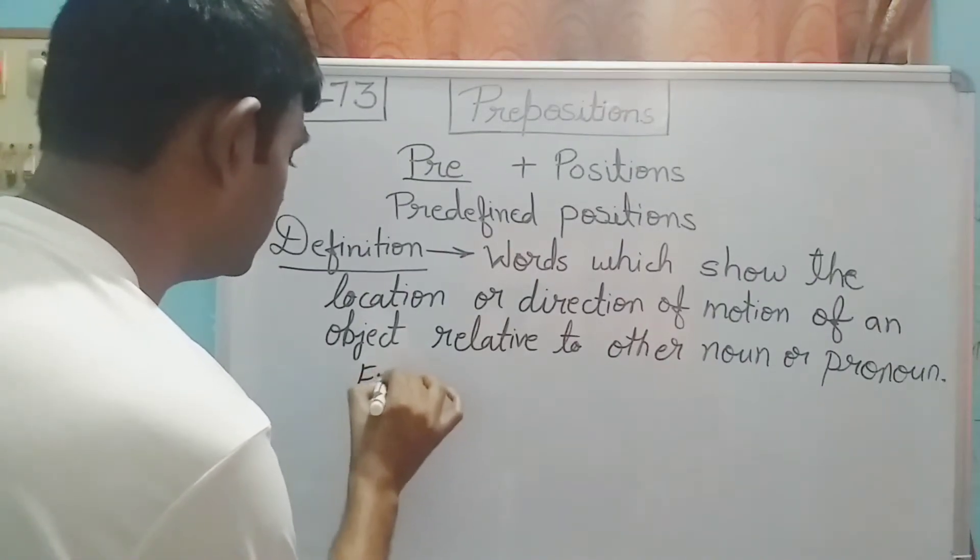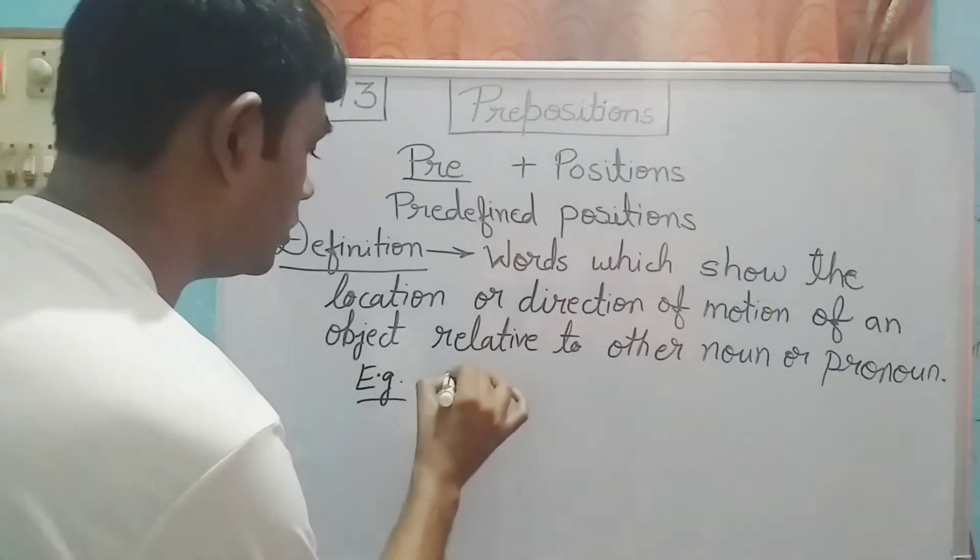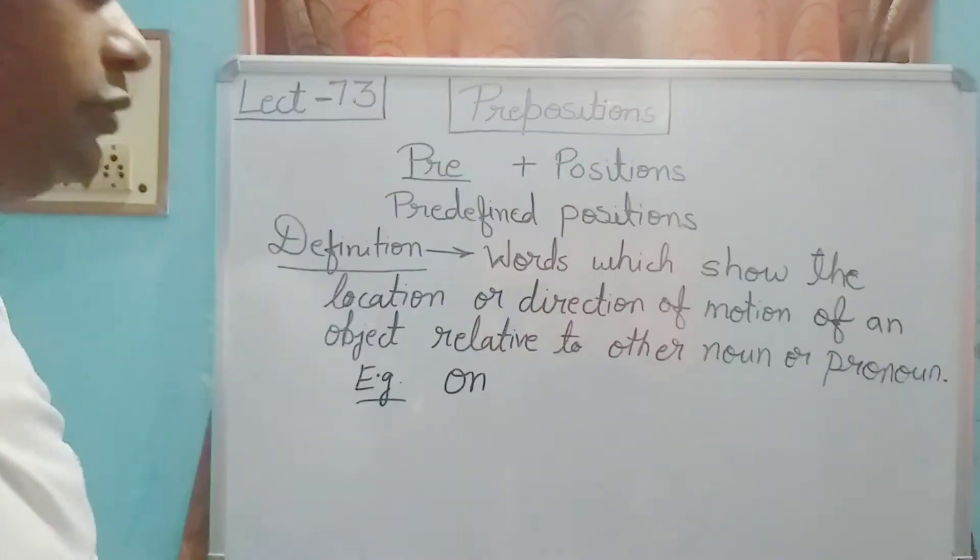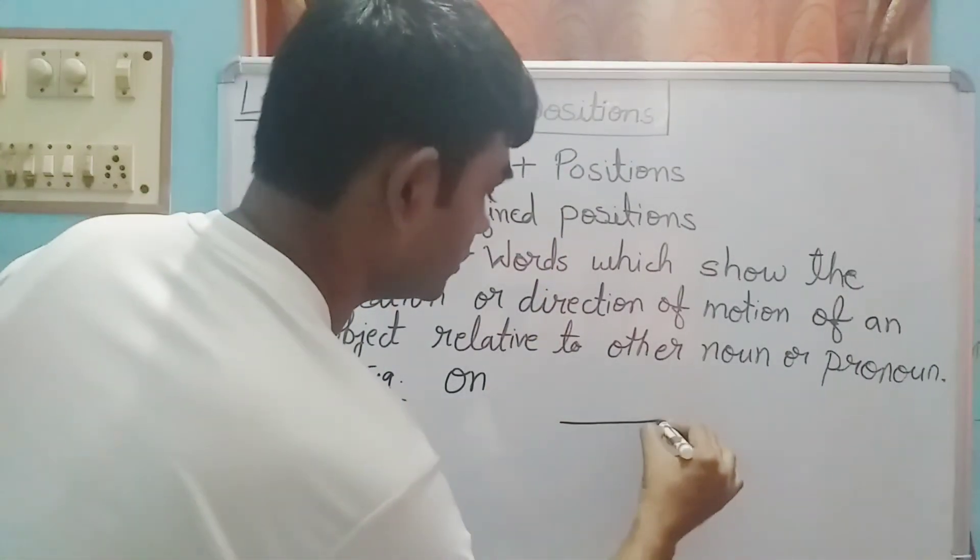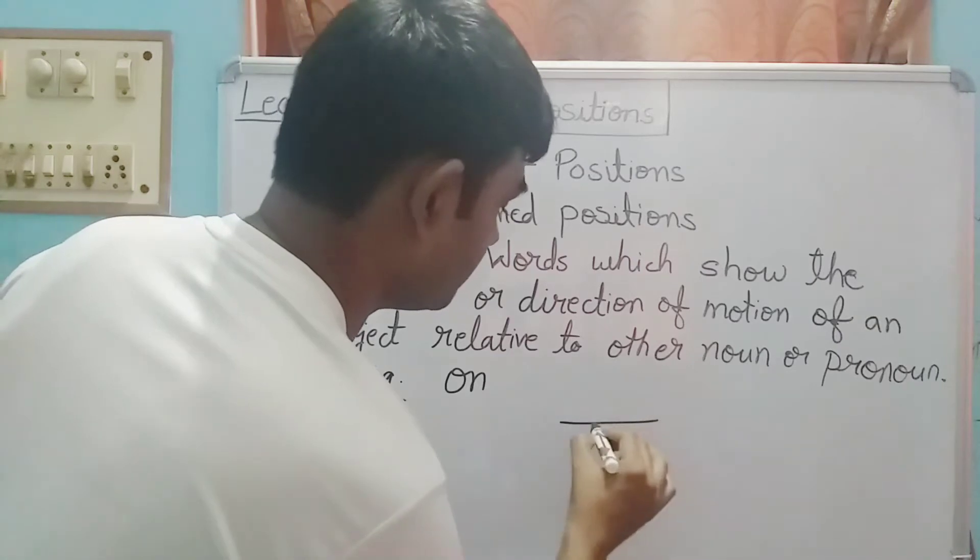For example, on. On ka use hum kip karte hain. Jaise suppose humare paas ek box hai.